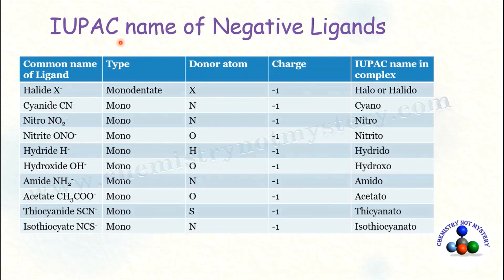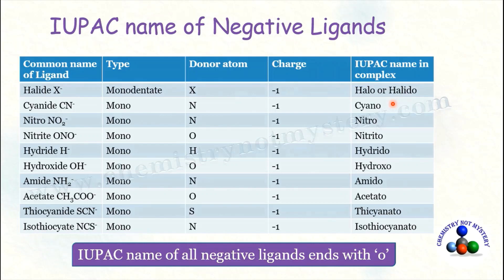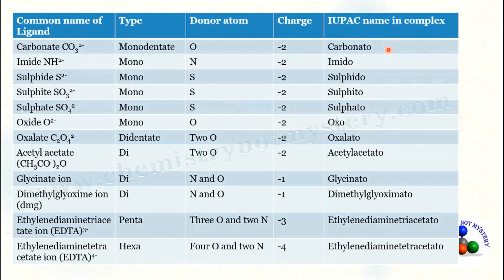Here is a list of IUPAC names of negative ligands. When you observe the IUPAC name of negative ligands, you will notice that all negative ligand names end with 'o.' For example, if halide is the ligand, its IUPAC name will be 'halo.' If cyanide is a ligand, its IUPAC name will be 'cyano.' You just have to go through the IUPAC names of all the ligands, including the extended list of negative ligands.